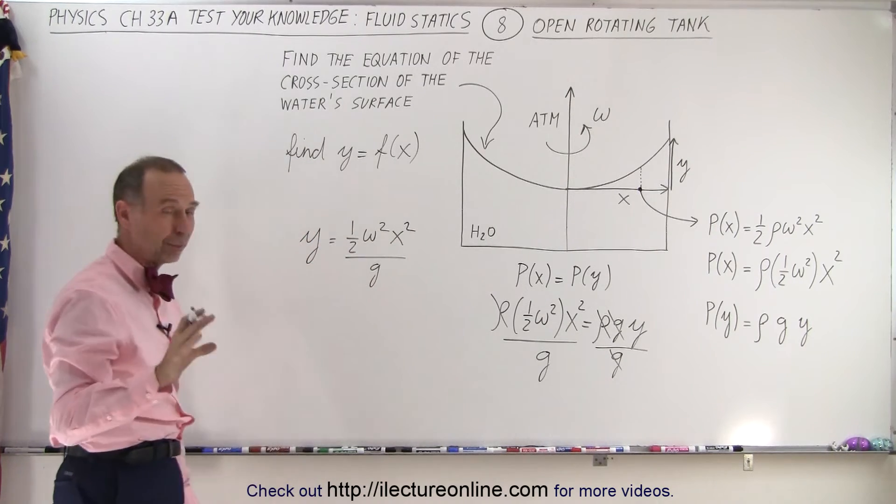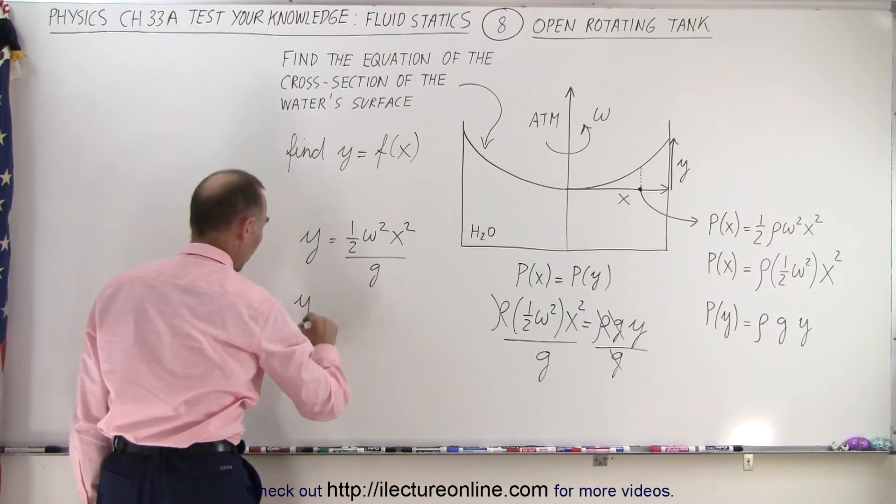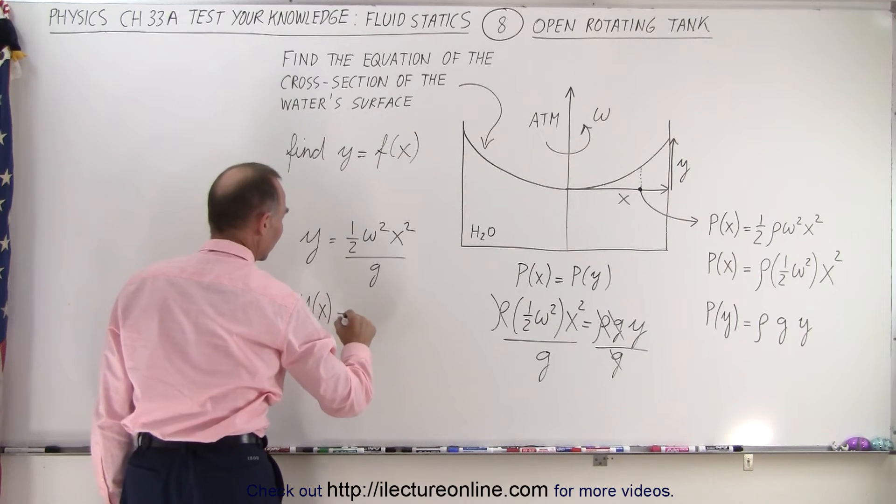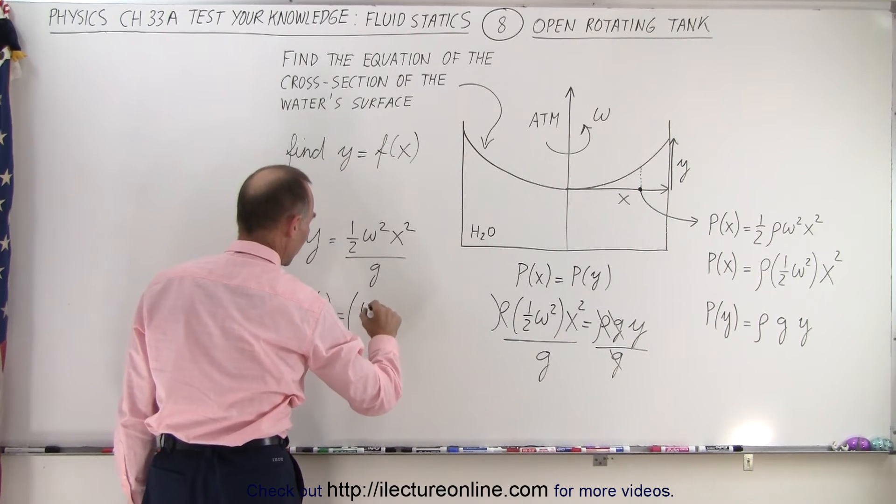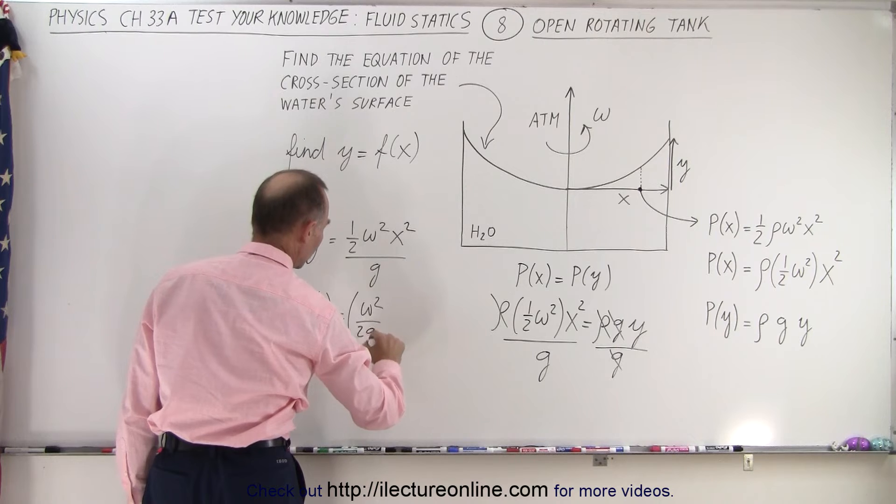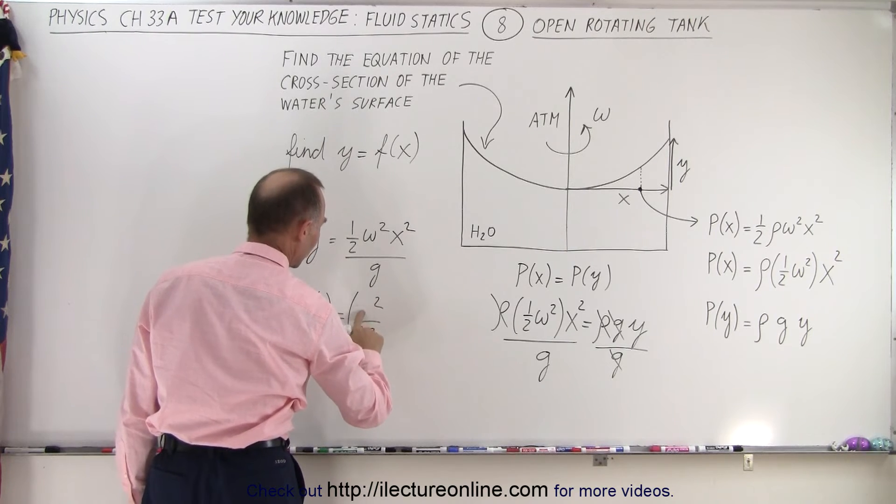And then if I write it just a little bit differently, I can then say that y, which is a function of x, is equal to the quantity omega squared divided by 2g times x squared, and that looks like part of a regular quadratic equation.